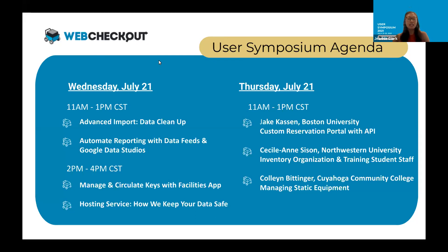Today we have four presentations to showcase. We'll begin with Brittany Wood, who will show us how to clean up your resources and resource types with advanced imports, followed by me, Jeannie, where I will review report automation using our data feeds in Google Data Studio. After a short break, AJ Oopman will highlight the new facilities app to manage physical keys. And then John Solorzano, our information security analyst and level three tech support — he wears many hats — will shed light on our hosting service and how we keep your data safe.